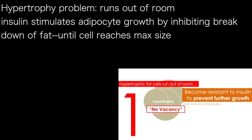Insulin stimulates adipocyte — that is, fat cell — growth. It largely does this by inhibiting the breakdown of fat, with a generally modest influence of pushing in more fat. So what makes the fat cell grow is inhibiting the breakdown. But when the fat cell is undergoing such substantial hypertrophy, it begins to reach a point of maximum dimension.